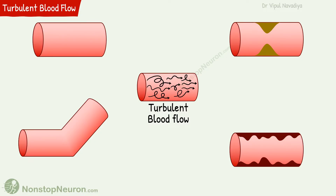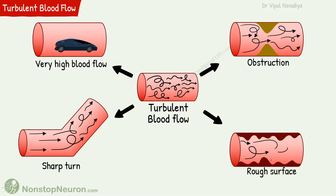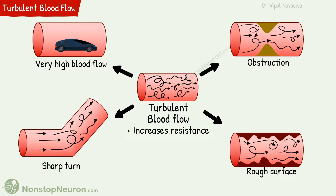Now let's talk about turbulent blood flow. Blood flow becomes turbulent in case of very high blood flow, obstruction in a vessel, when the blood makes a sharp turn, or flows over a rough surface. In turbulent flow, the blood flows in all directions, usually forming whorls and continuously mixing within the vessel. Turbulence increases resistance to the blood flow.